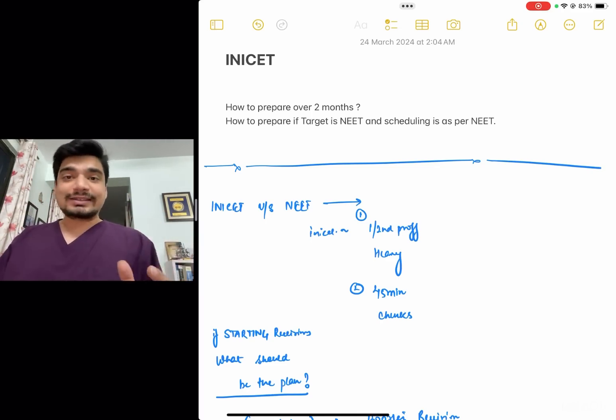you do not really stand a chance of cracking INICET, especially with the top 500 or top 100 rank that really gets you a good college and a good branch. So in that particular scenario, what I'm going to advise you is that you should now start focusing more on first and second prof and slightly start decreasing the time that you spend on your final prof, especially on medicine.